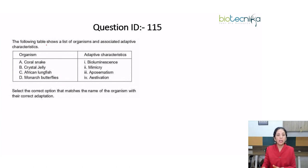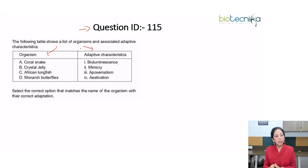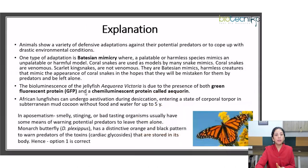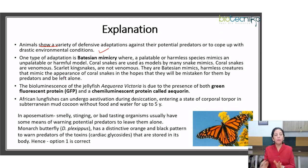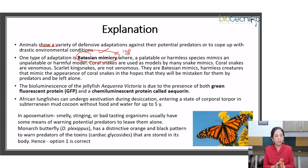Now let us move to question ID 150. A table has been given with names of organisms in one column and adaptive characteristics in the other column. We are asked to select the correct option that matches the name of the organism with the correct adaptation. That was an easy question if you know about adaptations. Animals show a variety of defensive adaptations against potential predators or to cope with drastic environmental conditions.